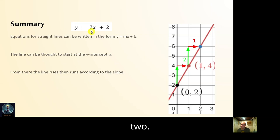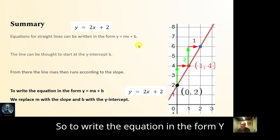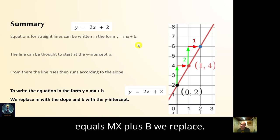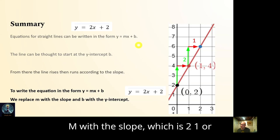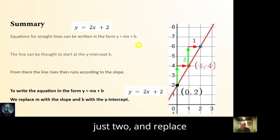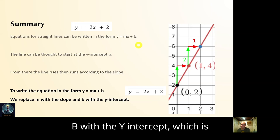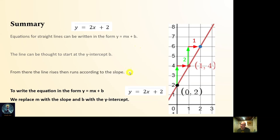So to write the equation in the form y equals mx plus b, we replace m with the slope — which is two over one, or just two — and replace b with the y-intercept, which is also two. And we are finished.